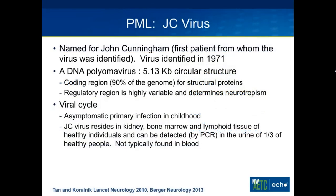The JC virus was named after the first person from whom the virus was isolated, John Cunningham, and it was identified in 1971. It is a polyoma virus, a 5KB circular structure. Most of its genome is devoted to the coding of structural proteins, and there's a smaller regulatory segment that is highly variable and determines whether or not the virus is neurotropic.